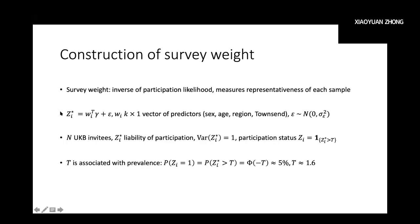In order to calculate the survey weight for each individual, we have to estimate the participation likelihood, and to estimate the participation likelihood, we use a probit model. We build a probit model on all the UK Biobank invitees. The Z-star denotes the latent variable in the probit model, which we call the liability of participation. A common assumption is that the variance of Z-star is equal to one. When a person's liability exceeds a certain threshold, this person would be a participant; otherwise, a non-participant.